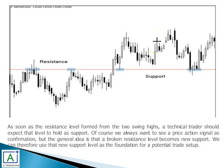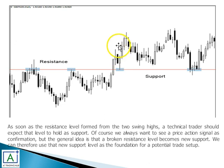As long as the support zone is not broken, traders keep looking for buying opportunities. A technical trader should expect that a broken resistance level will hold as support. We always want to see a price action signal as confirmation, but the general idea is that a broken resistance becomes a new support. Price action traders wait for this confirmation and then look for buying opportunities in the market.